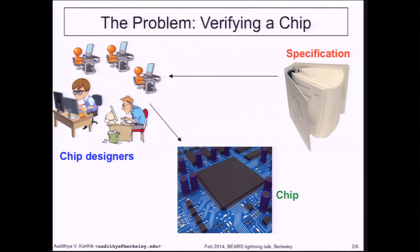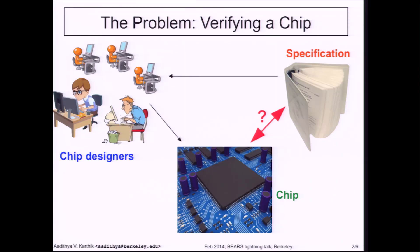Let's say they eventually come up with a design. The problem is we have the specification document, which is typically a complex technical document that runs into hundreds of pages, and we have this chip, which is also remarkably complicated because it's got millions if not billions of transistors. So how are we going to check that this chip actually adheres to the given specification?